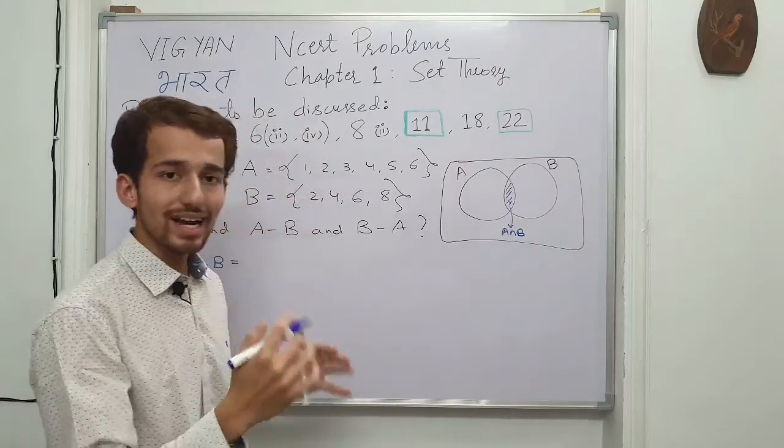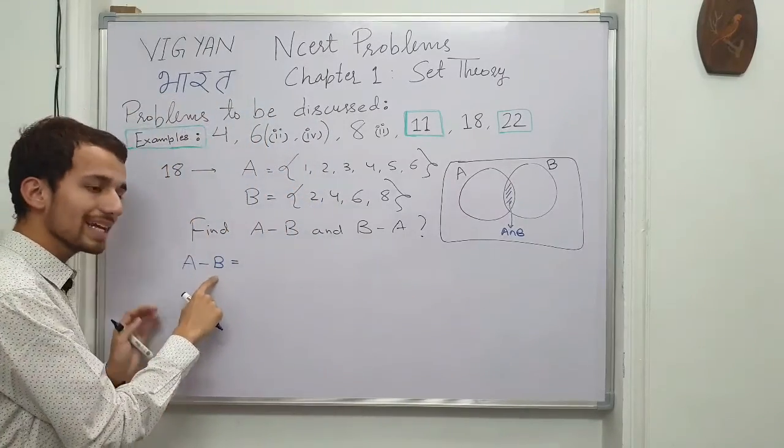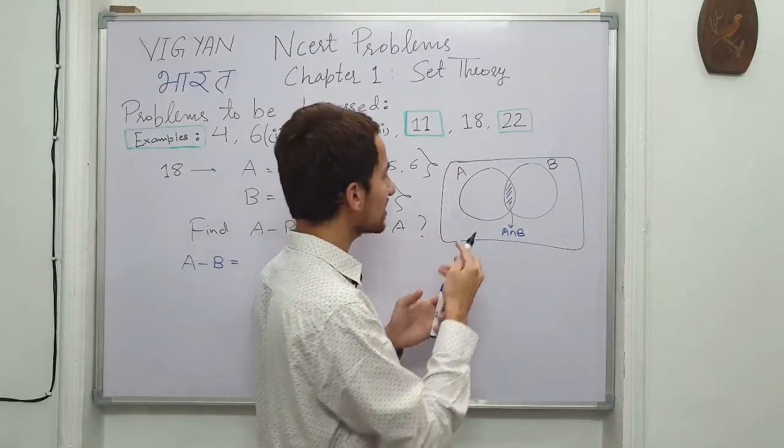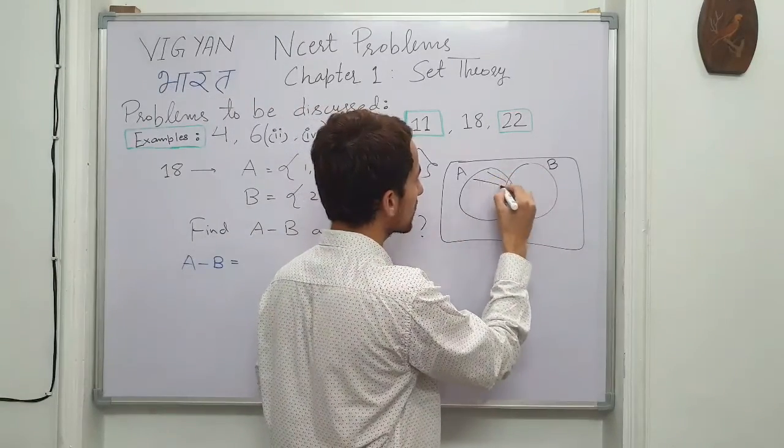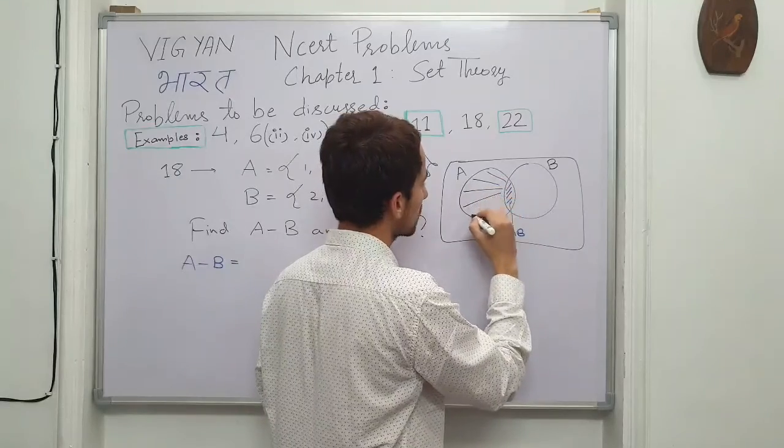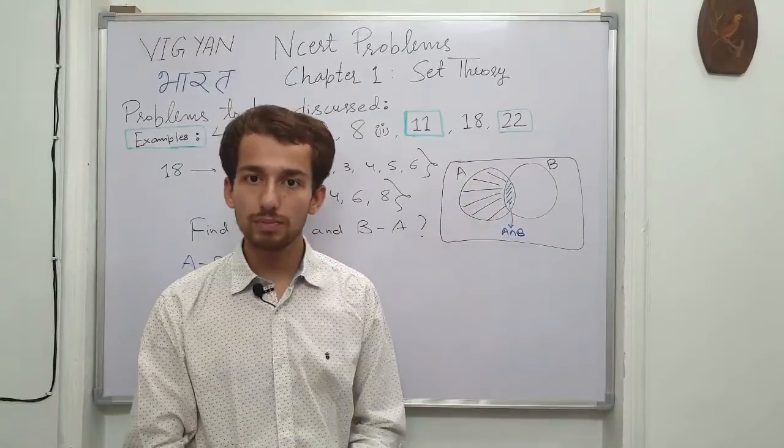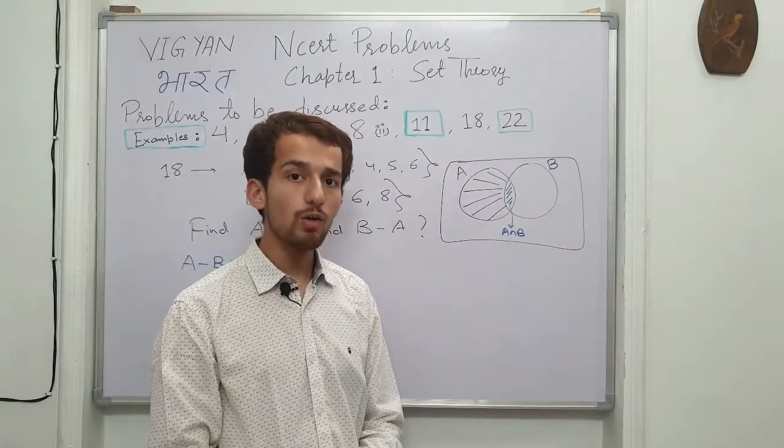So what we are asking here, all those elements of A which are not in B. So basically we need only this much of information. So basically this black region we are trying to find in this problem.